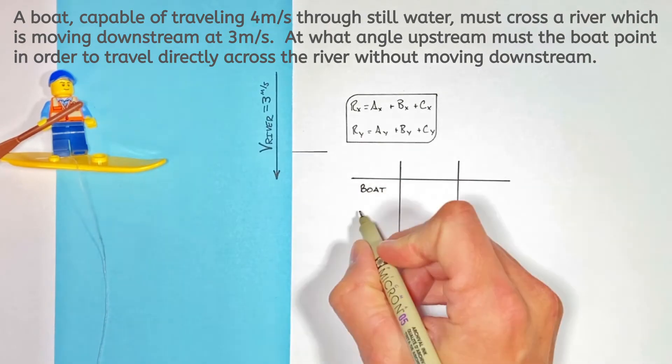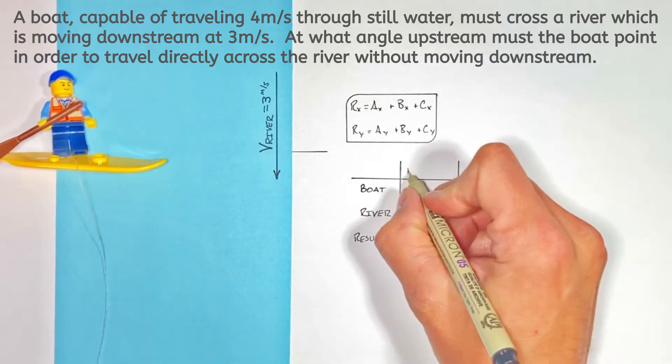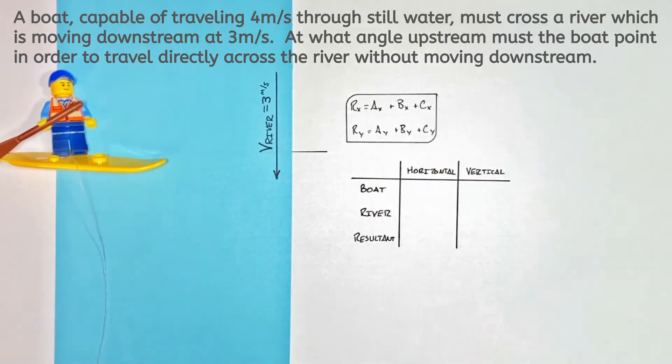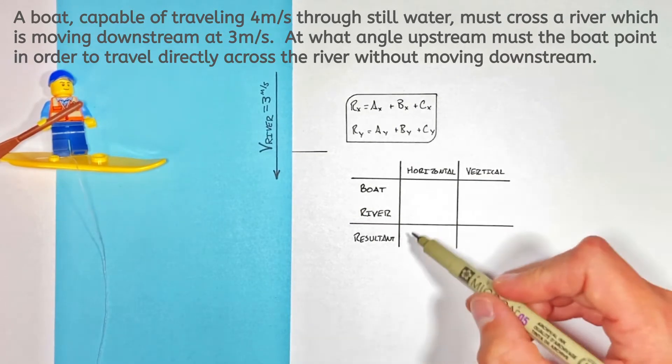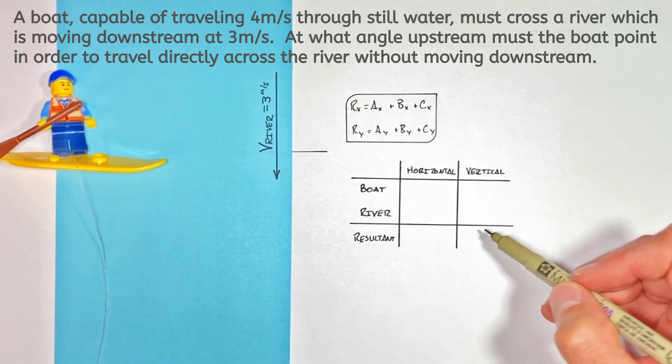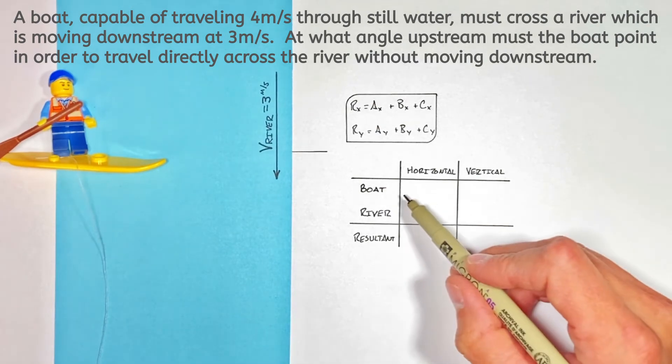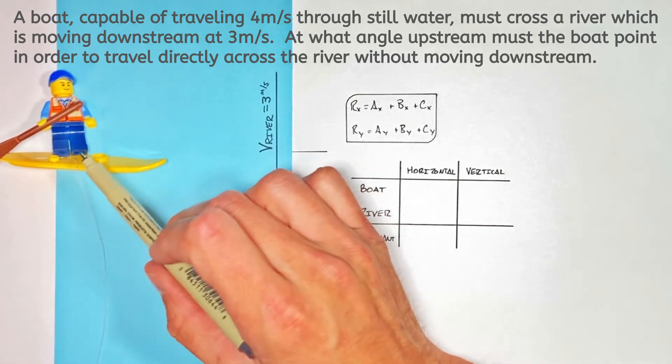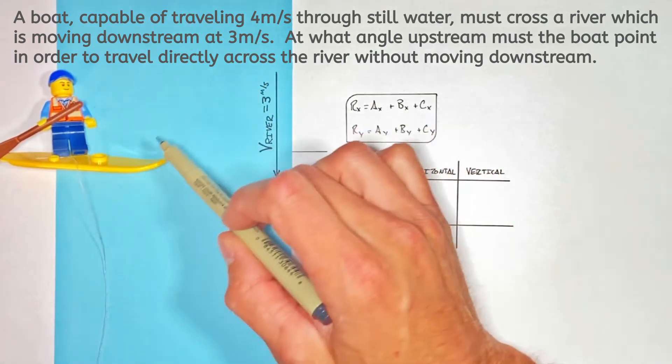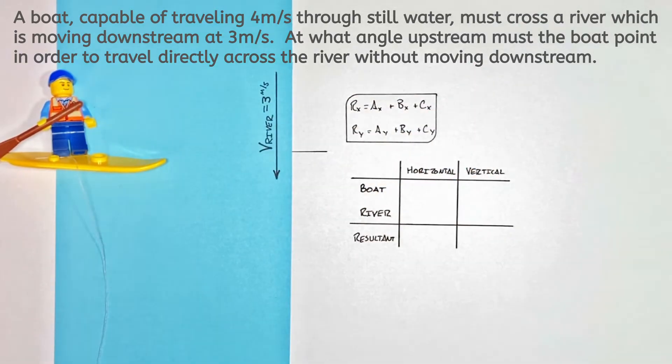See, there are three velocity vectors in this problem, each of them have a horizontal and vertical component. Now, the trick in this problem is understanding how each of these components relate to one another, and then understanding how to use those components to find the actual direction this boat is going to have to be pointed in order to make it straight across the river.